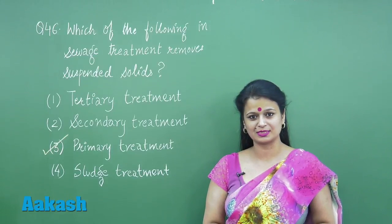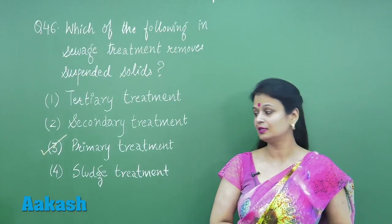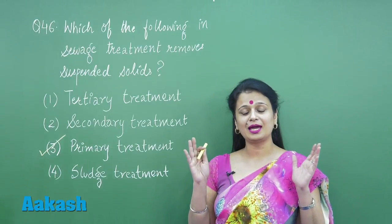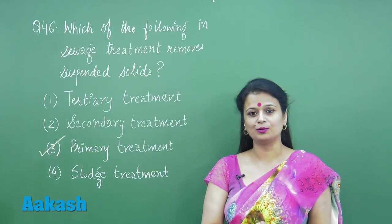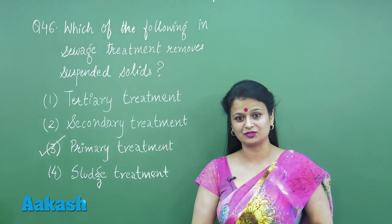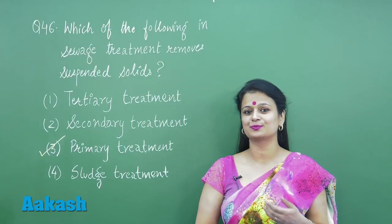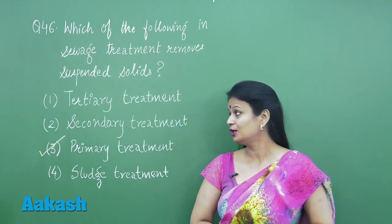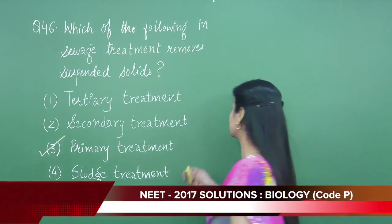Tertiary treatment is a physical as well as chemical process — both physical and chemical treatment are done. Now coming to sludge treatment: during the sewage treatment plant process there is production of sludge. This sludge is treated through anaerobic digestion, after which it is converted into gaseous products. One gaseous product produced is methane. So for question number 46, the right option is option number three.